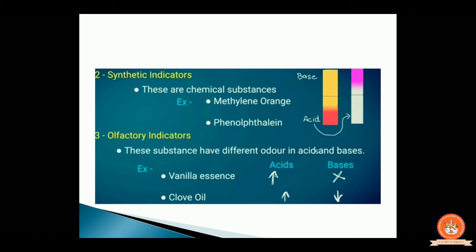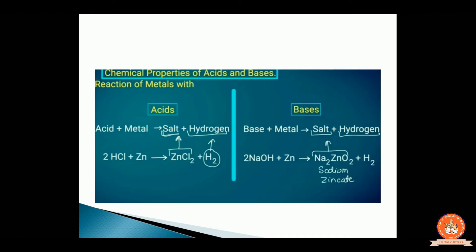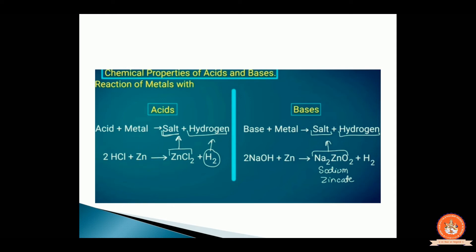Now let's come on to the chemical properties of acid and base. When acid reacts with metal, it gives us salt plus hydrogen gas. Taking the example: 2HCl (acid) reacts with Zn (zinc, metal) to give ZnCl₂ (a salt) and H₂ (hydrogen gas). The type of reaction occurring here is a displacement reaction, because Zn displaces hydrogen from HCl to form ZnCl₂.